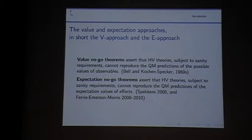One is the classical value no-go theorems which go back to Bell and Kochen and Specker. And there was a recent wave of work on this issue on expectation no-go theorems.